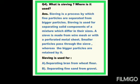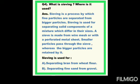Sieving is used when components differ in size. A sieve is made from wire mesh or a perforated metal sheet. Smaller particles pass through the sieve, whereas the bigger particles are retained by it — smaller particles pass out and bigger particles remain on the sieve.